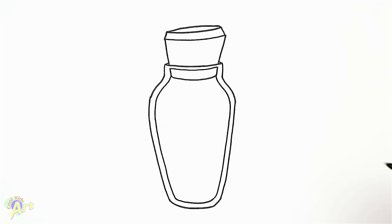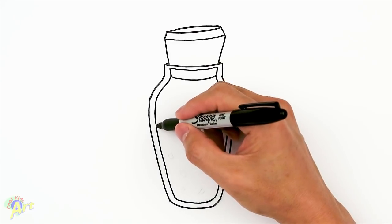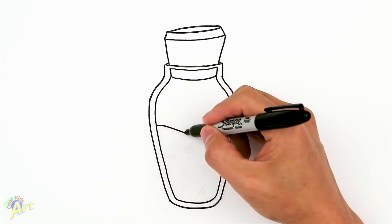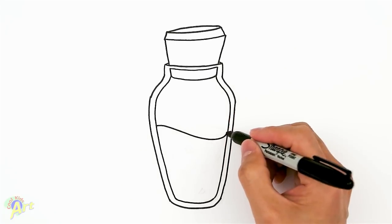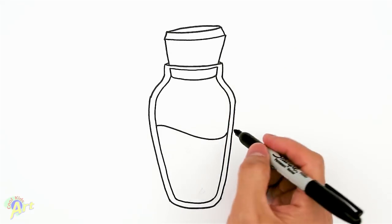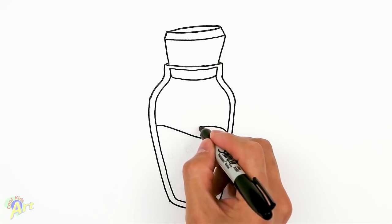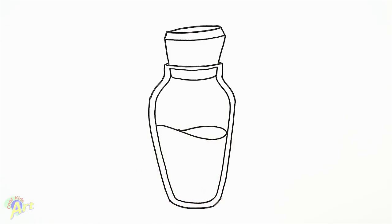And now for the liquid inside, I'm going to make it flow a little bit. Just start on one side, kind of come up, go down, and curve it back on the edge. And then from here, you want to go this way and just kind of pinch it right there so it looks like flowing water.